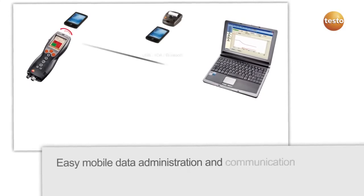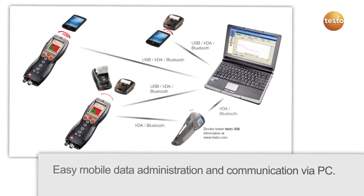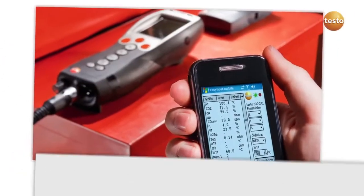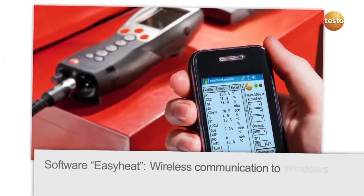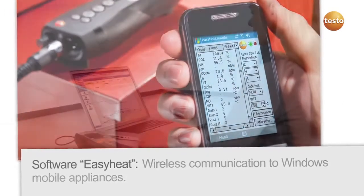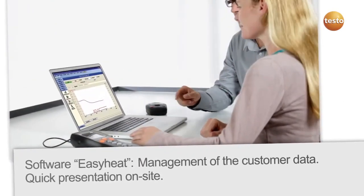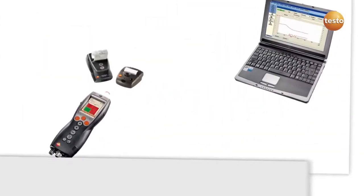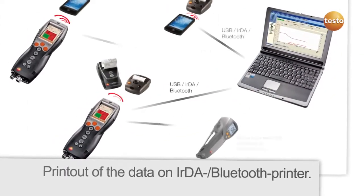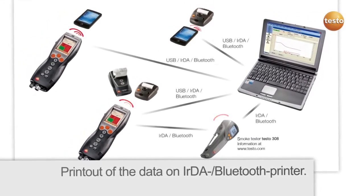The Testo 330LL communicates with PC and Testo 308 smoke testers. Software packages give you the possibility of adapting the Testo 330LL to your communication needs and enable the presentation of results for the customer. The printout of data from a PC or a pocket PC takes place directly via the IRDA or Bluetooth printer.